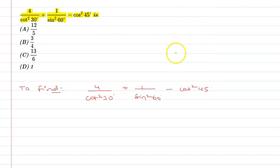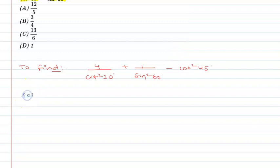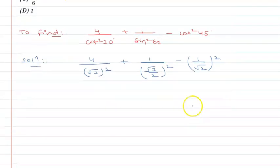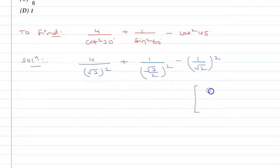So if I look at the value, 4 upon cos square 30 is root 3 upon 2 square, plus sin 60 is root 3 upon 2 square, minus cos 45 is 1 upon root 2 square. So I have used values that are cos 30 that is root 3 upon 2, sin 60 that is root 3 upon 2, and cos 45 that is 1 upon root 2.